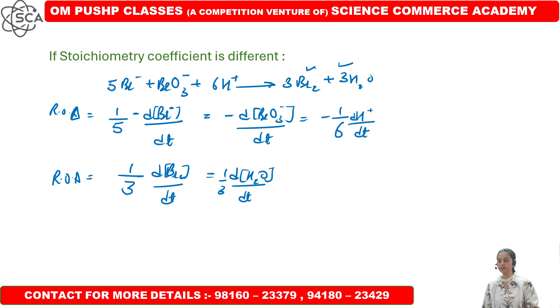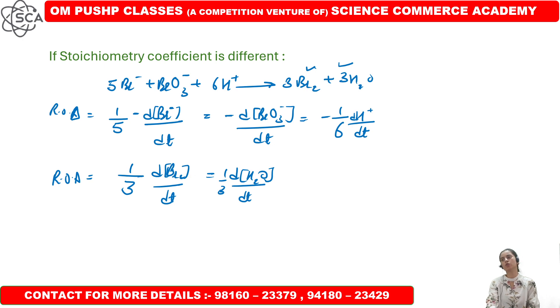So this was the concept of stoichiometric coefficients — that is your key difference when writing rate expressions with different coefficients.